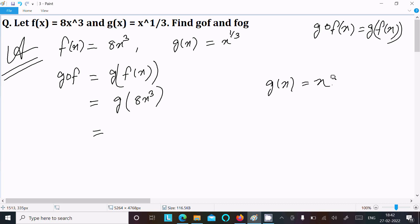Then after g, so g(x) value is now x^(1/3), and g(8x³) = we can write (8x³)^(1/3).